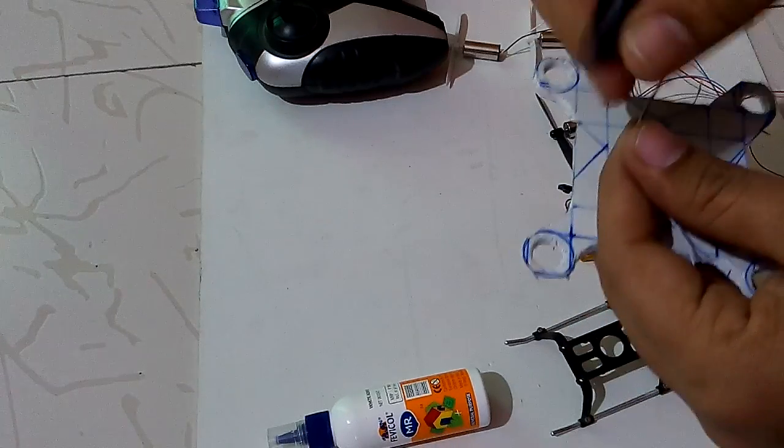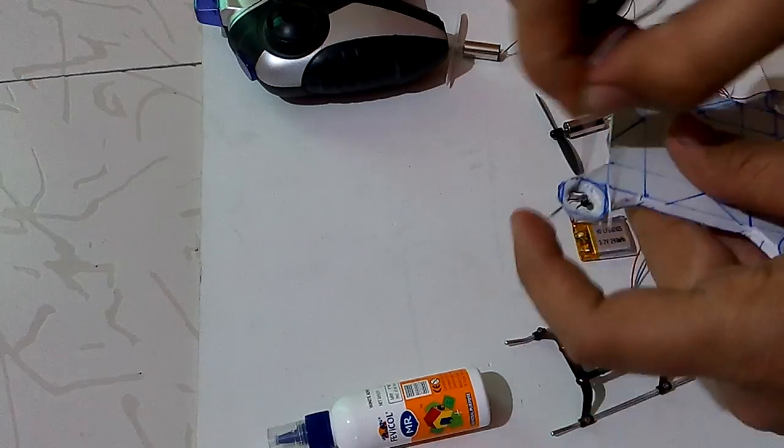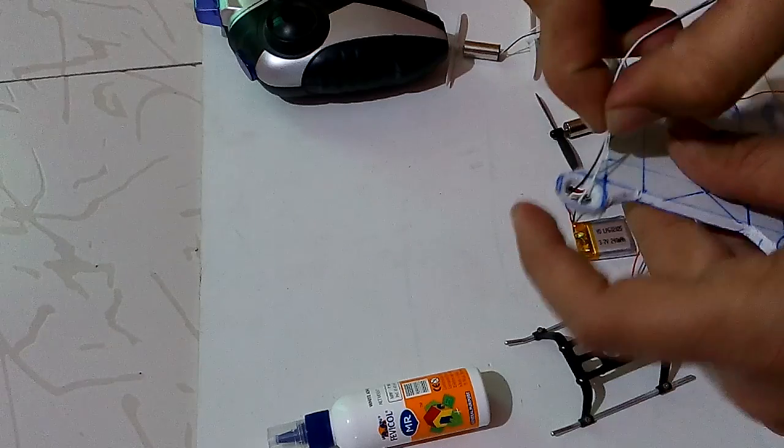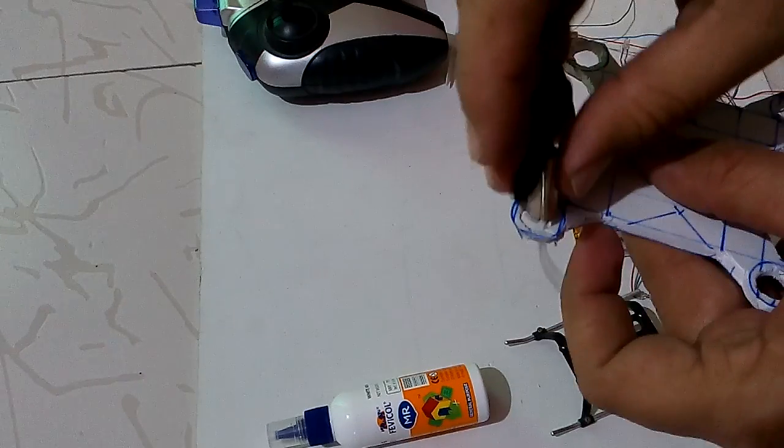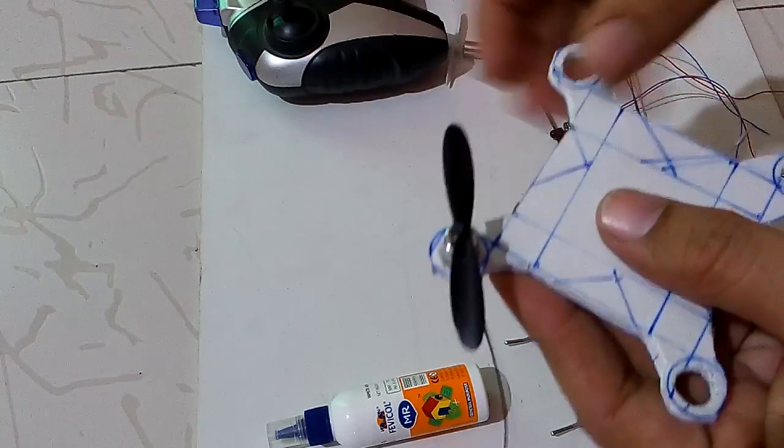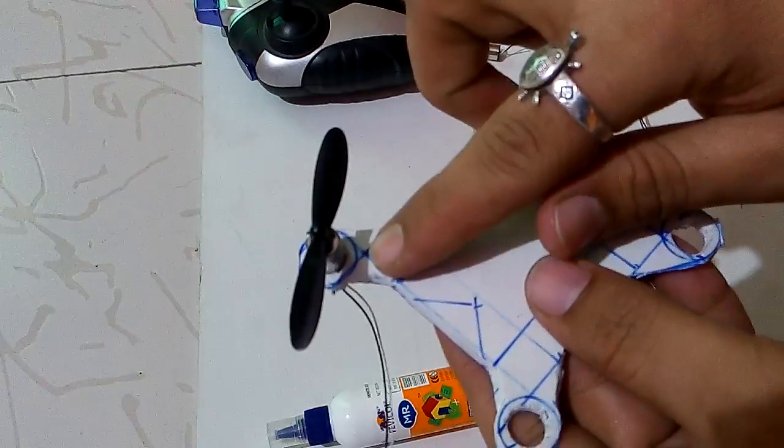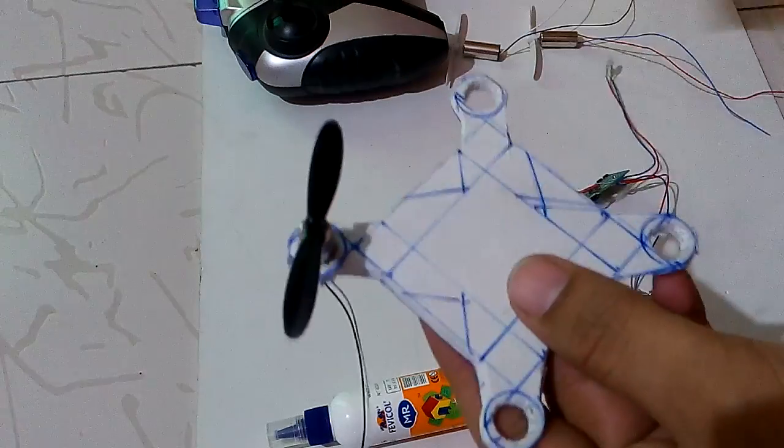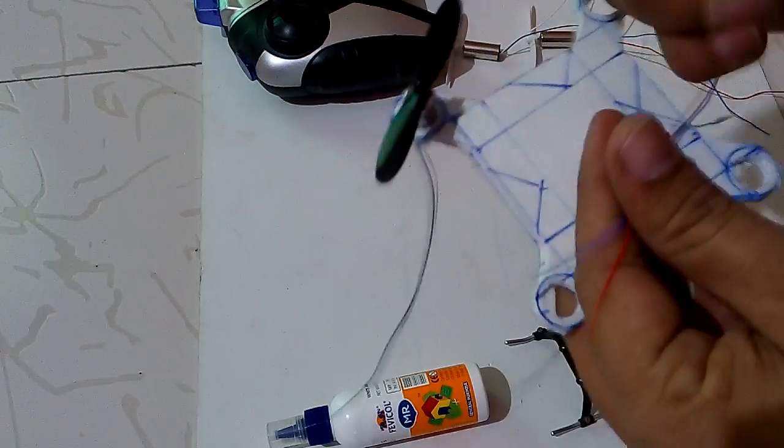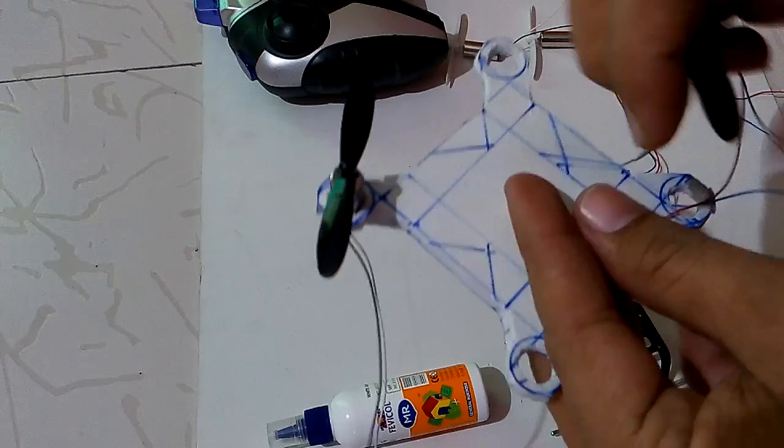Now we fix these four DC motors in such a way that they are diagonally opposite to each other with same propeller colors. For example, I am fixing this. Here I fix a black DC motor with black propeller.